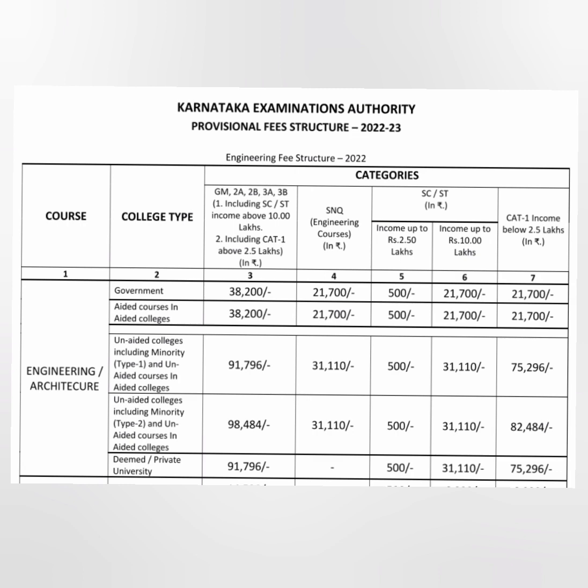The most popular category is unaided or private colleges, which have two types: type 1 and type 2. There is a government classification based on their establishment, resulting in a fee difference. Type 1 private college fees are 91,000, while type 2 is 98,000 — approximately a 7,000 difference. It has not been clearly explained which institutes qualify for each type, but it will be shown at the time of fee payment. The SNQ fees remain the same regardless of type 1 or type 2, and SCST fees also remain unchanged between the two types.